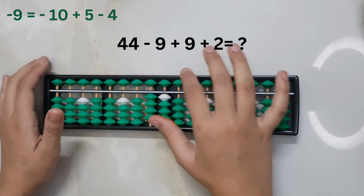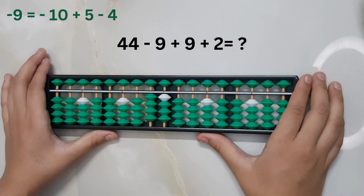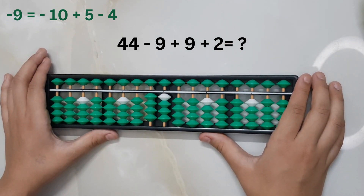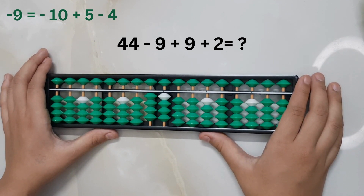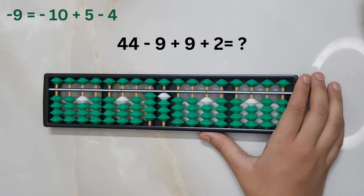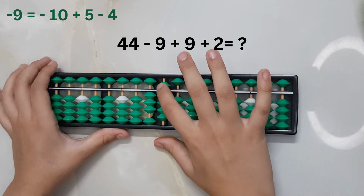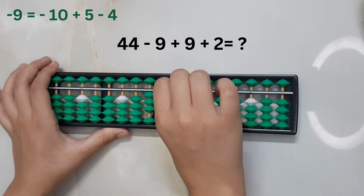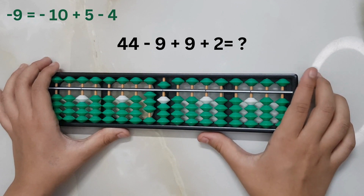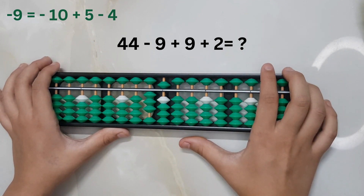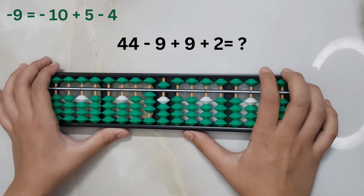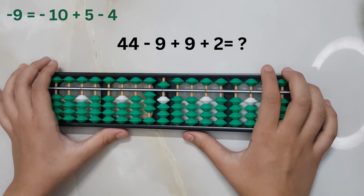44 minus 9. We cannot subtract 9 directly, and the big friend formula for subtracting 9, which is minus 10 plus 1, cannot be used here. So we will take help from the combination formula: minus 10 plus 5 minus 4.